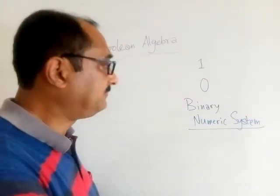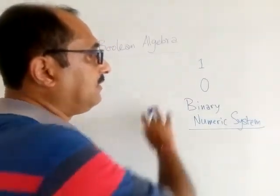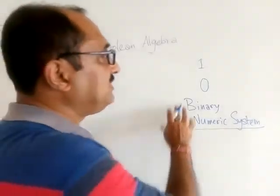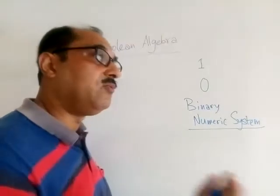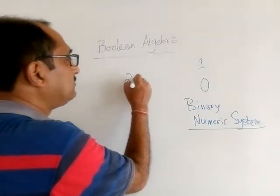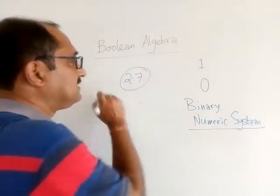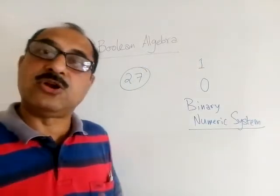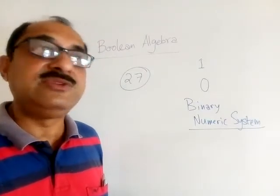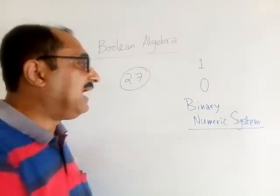I was talking about binary numeric system. So in this numeric system we use two digits only: one and zero. Now imagine a number, say 27. This 27 is taken from our normal decimal numeric system, that is the numeric system which we use in our daily life. And this is our binary numeric system.